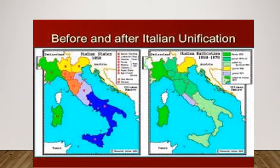This is the map showing Italy before and after unification — this is how Italy looked before unification and after unification.